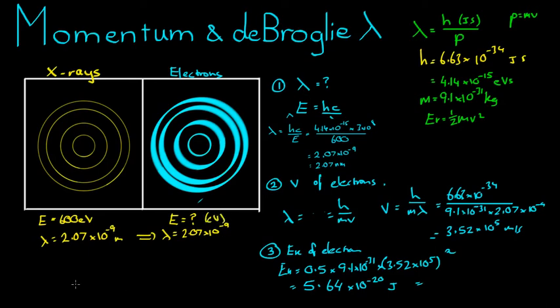And if I wanted to get that in electron volts, to go from joules to electron volts, you divide by 1.6 times 10 to the negative 19. And to go from electron volts to joules, you multiply by 1.6 times 10 to the negative 19. So this in electron volts is 0.35 electron volts. So not a lot of energy at all.